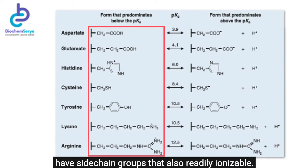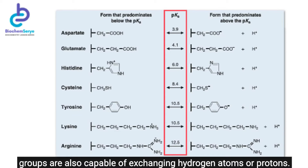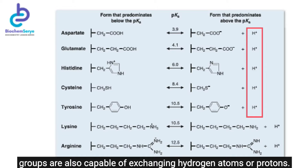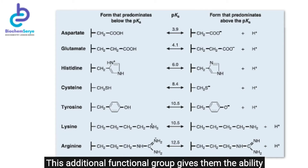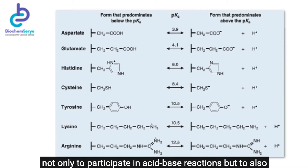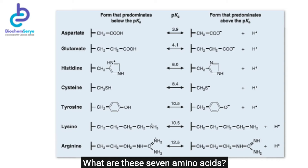Seven of the 20 amino acids are trifunctional and have side-chain groups that are also readily ionizable. This means that at certain pH values, these ionizable side-chain groups are capable of exchanging protons. These side groups can donate and accept hydrogen atoms and become ions, giving them the ability not only to participate in acid-base reactions but also to form ionic bonds intramolecularly and intermolecularly.